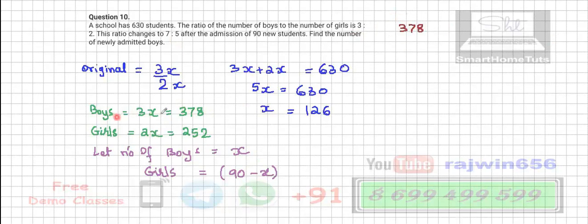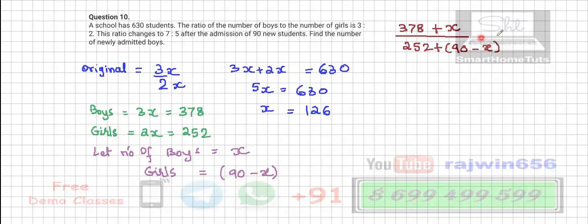This is the original number of boys, number of boys is x, divided by original number of girls is 252, new girls admitted is plus 90 minus x. This is equal to now, the new ratio is going to become 7 is to 5.